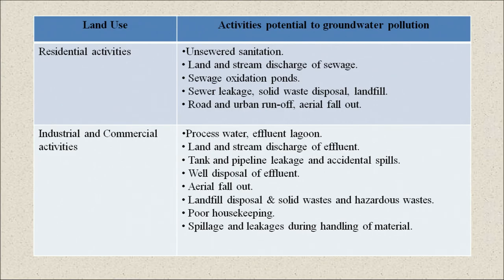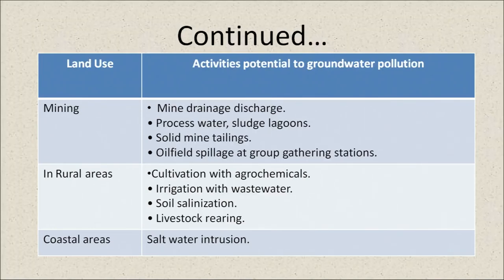Other industrial threats include aerial fallout, poor housekeeping, spillage and leakage, and improper maintenance and handling of materials. Mining-related threats include mining drainage discharge, process water sludge lagoons, solid mine tailings, and oil field spillage. Agricultural threats include cultivation with agrochemicals, irrigation with wastewater, soil salinization, livestock rearing, and in coastal areas, salt water intrusion.